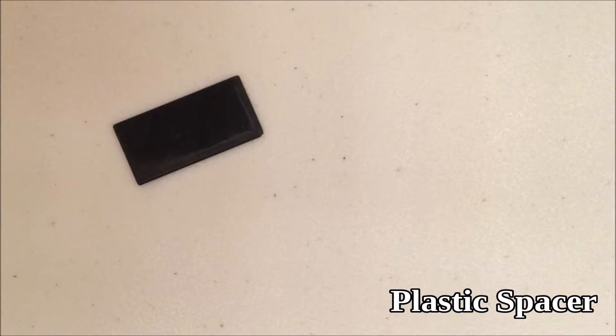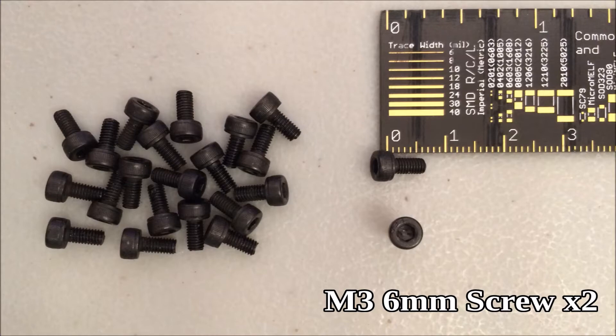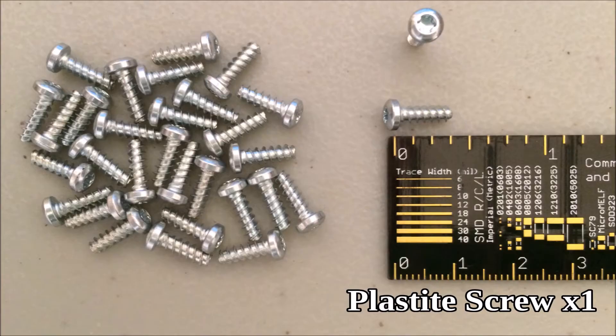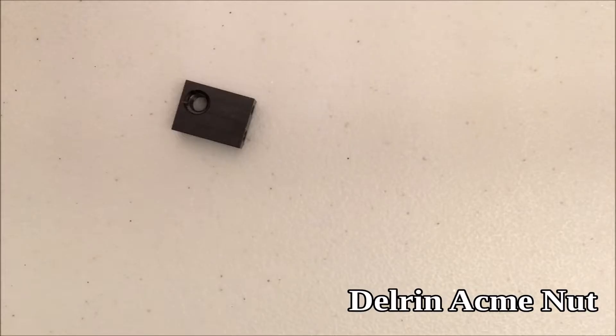This spacer will be repurposed for this step although it's intended for configuring the auto leveling probe or induction sensor. You also need two M3 6 millimeter screws, one M3 30 millimeter screw, one plastite screw, and the Delrin Acme nut.